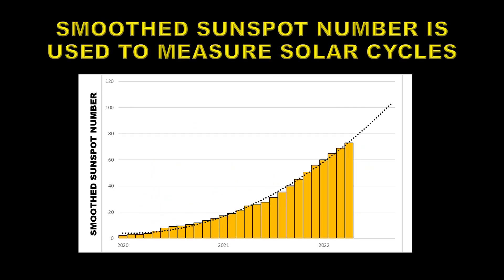Let's take a detailed look at the smooth sunspot number from the minimum between Solar Cycles 24 and 25 — essentially Solar Cycle 25's evolution. You can see the curve is still going up and is actually still accelerating, so I think the higher of the two model predictions will be more accurate than the lower one.